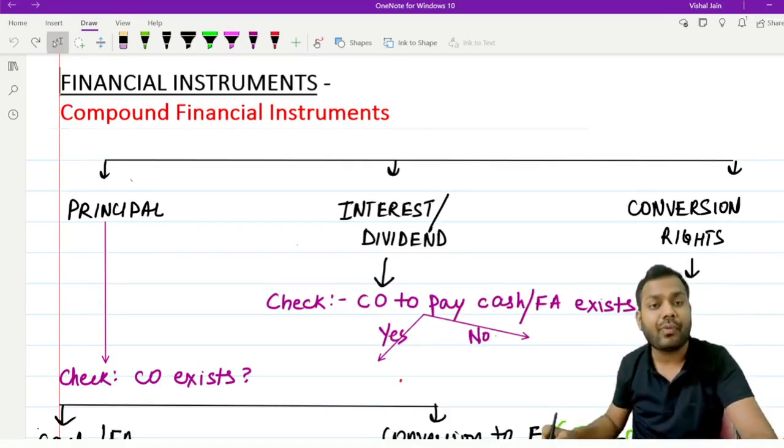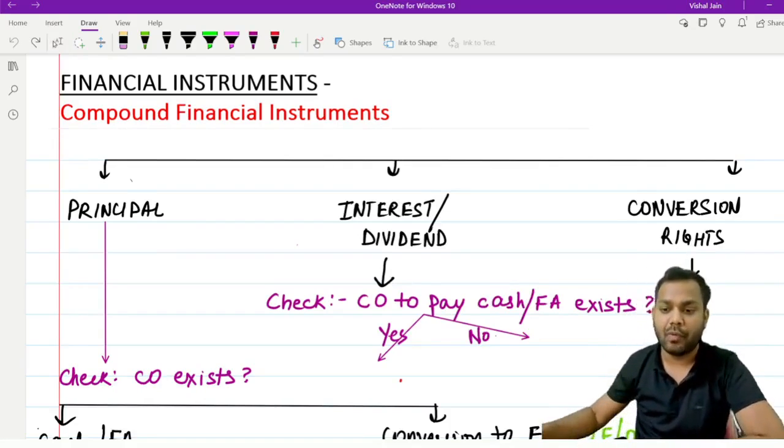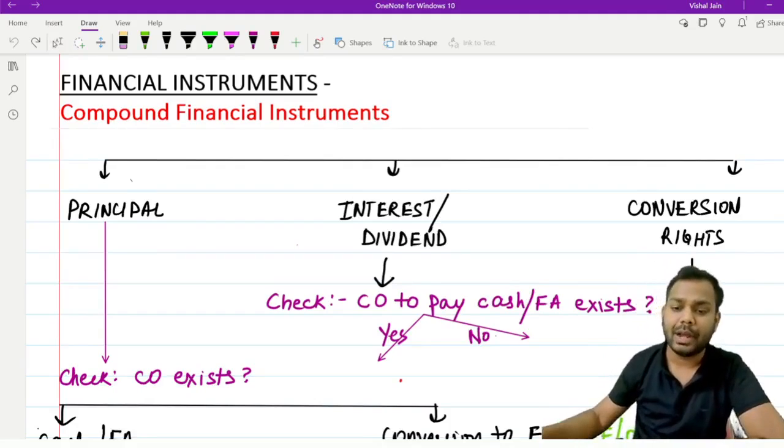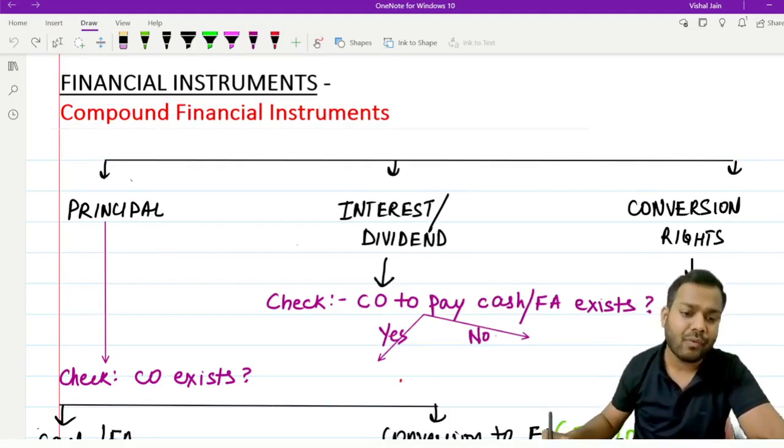There are three strips of any compound financial instruments: conversion rights, interest or dividend, and principal. We'll study each of them one by one.